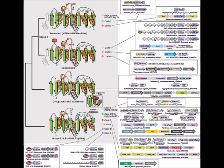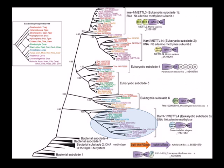Our study of adenine methyltransferases in eukaryotes reveals that they have been acquired on several occasions from bacterial restriction modification systems. One such transfer from bacteria appears to have happened rather early in eukaryotic evolution, resulting in the enzyme known as DAMT-1 or METL4. In other eukaryotic lineages, such as chlorophyte algae, we find many other adenine methyltransferases which seem to have been acquired via independent transfers. Likewise, in fungi, we have uncovered adenine methyltransferases which represent yet other independent transfers.